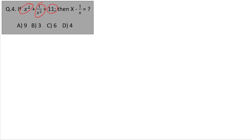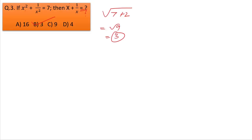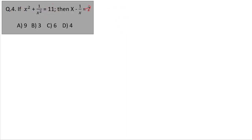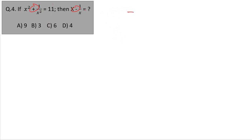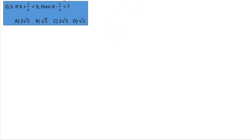Question number four: x squared plus 1 by x squared plus or equal to 11. Find x minus 1 by x. The answer is root over 11 minus 2, root over 9, equals 3. Option number B.